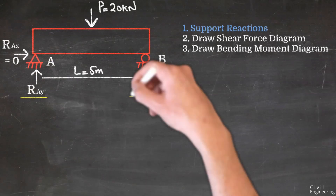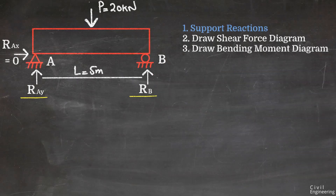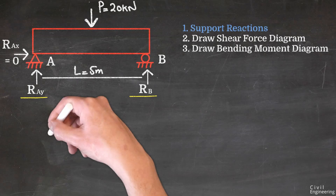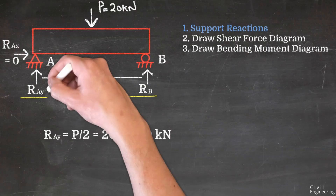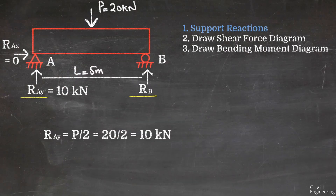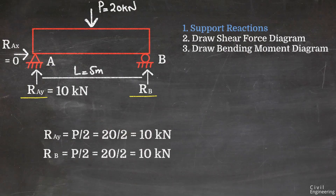The 20 kN load acts at the center of the beam, and there are only two reactions RAY and RB to carry it. Since the load is symmetric, it is divided equally. RAY = P/2 = 20/2 = 10 kN, and similarly RB = P/2 = 20/2 = 10 kN.